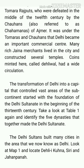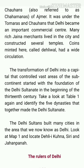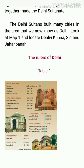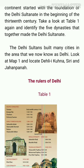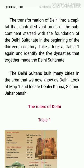Take a look at Table 1 again and identify the five dynasties that together made the Delhi Sultanate. These are the five dynasties: Early Turkish, Khalji, Tughlaq, Sayyad, and Lodi.